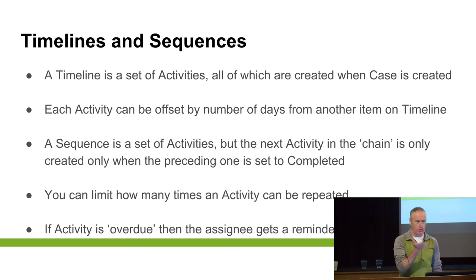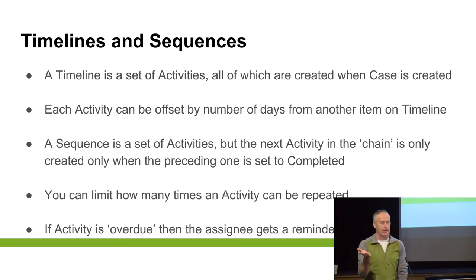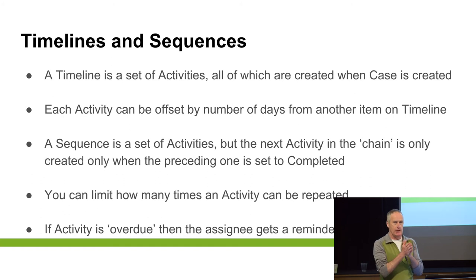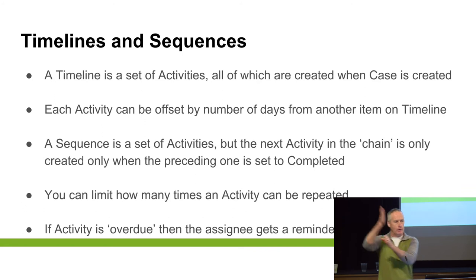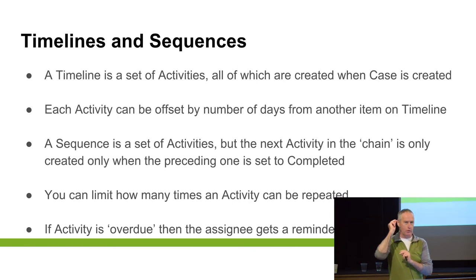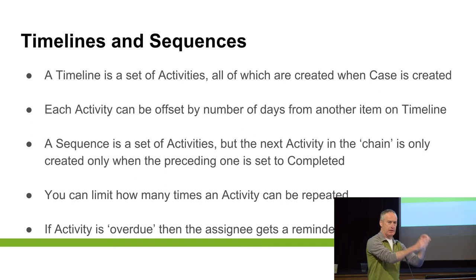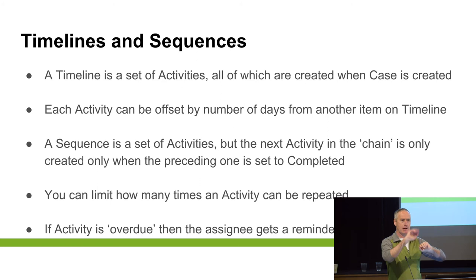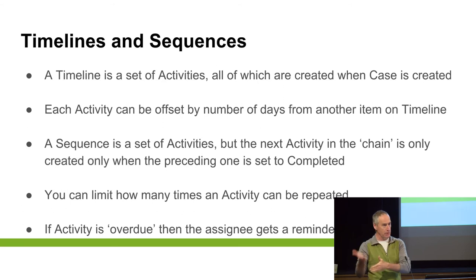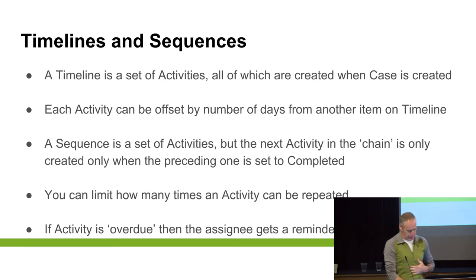Timelines and sequences — this is where you can get really clever if you need to. If you need to say this needs to be done within five days of the case being opened, and within two days of that something else needs to happen, you can set it in the case so that when you open a case, it creates activities with scheduled dates. It will start going red and sending emails to the assignee if you've reached that date and haven't marked the activity as completed.